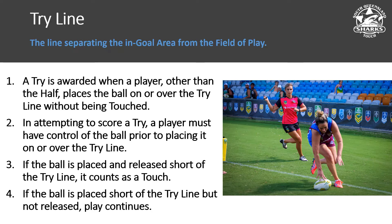However, if the ball is placed short of the try line but not released, the player can continue and actually put the ball down over the try line to score a try. We should be communicating all of this as they go, to assist them in getting it down in the right spot — because no player tries to score a try prior to the try line, they've just made a mistake about where it actually is.